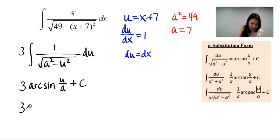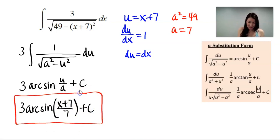Alright, it's time to plug back in our u and our a, and then we will be done. That's 3 arc sine of x plus 7 over 7 plus C. And that is how you integrate this given problem.